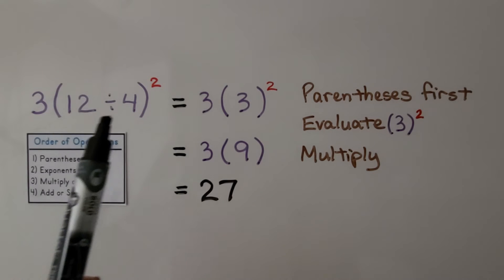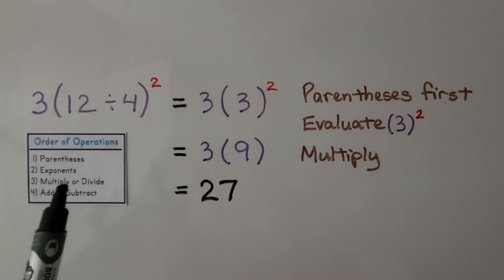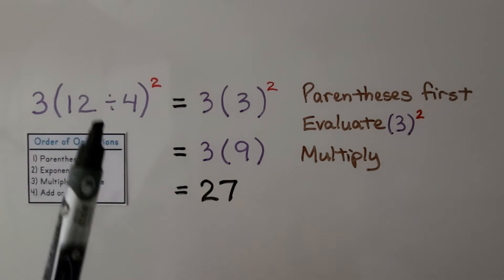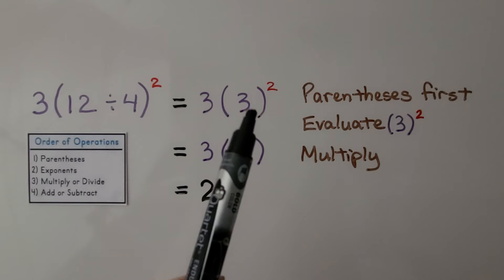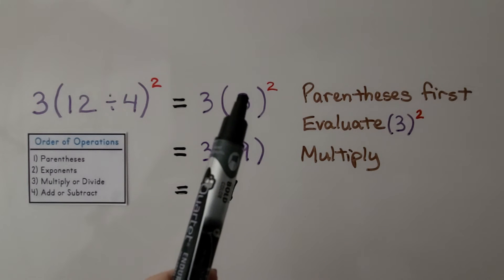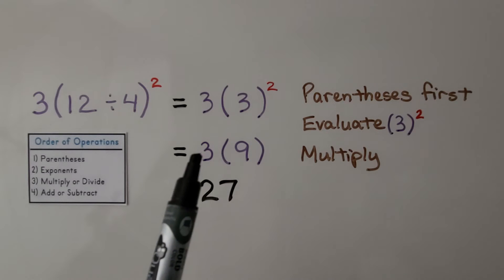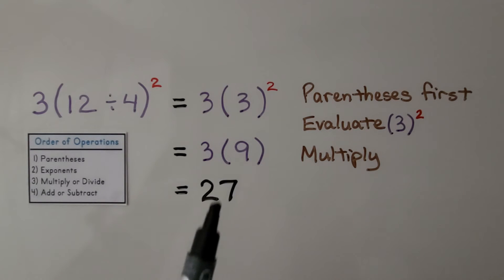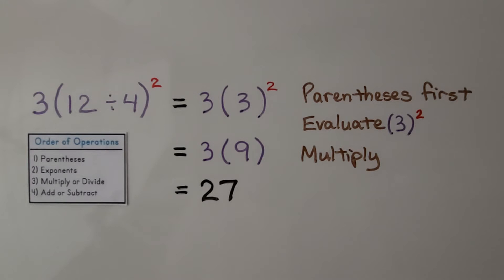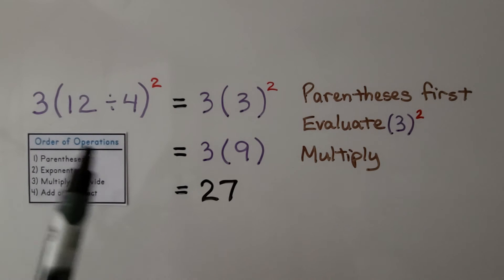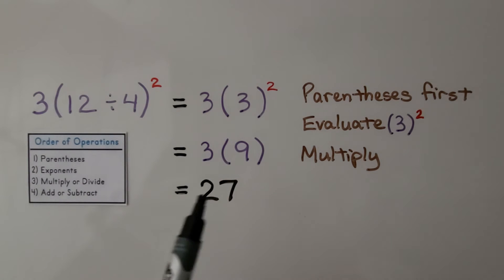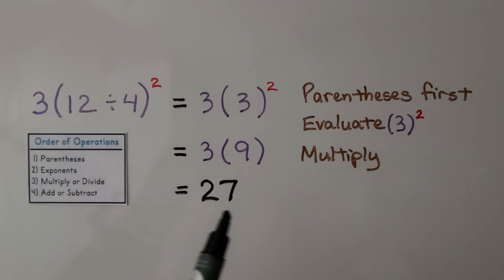We do inside the parentheses first — that's the first step. 12 divided by 4 is 3. We have an exponent: 3 raised to the second power is 3 times 3, which is 9. Now we multiply: 3 times 9 is equal to 27. We skip any step that is not in the list — there was no addition and no subtraction, so we ended with the multiplication.